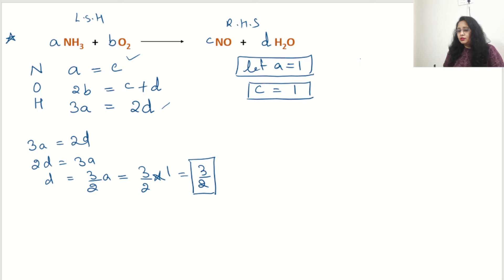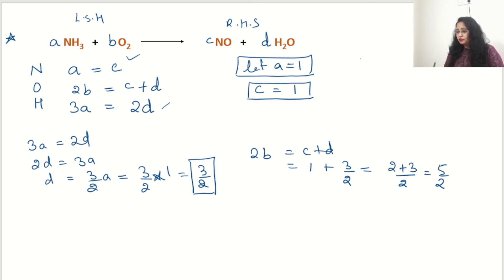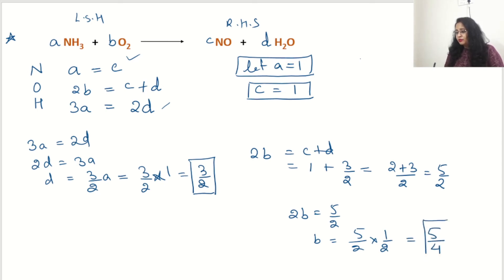Now for B: from equation 2, 2B = C + D. C = 1 and D = 3/2, so 2B = 1 + 3/2 = 2/2 + 3/2 = 5/2. Therefore B = 5/2 × 1/2 = 5/4. So our four values are: A = 1, B = 5/4, C = 1, D = 3/2.